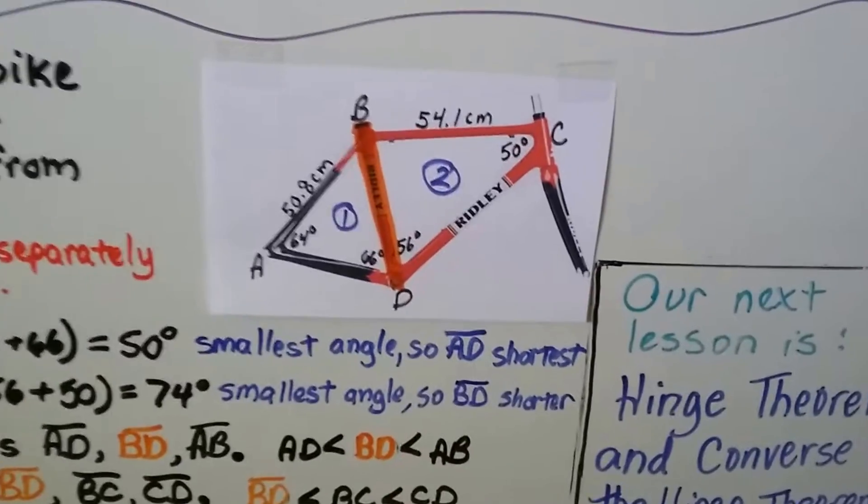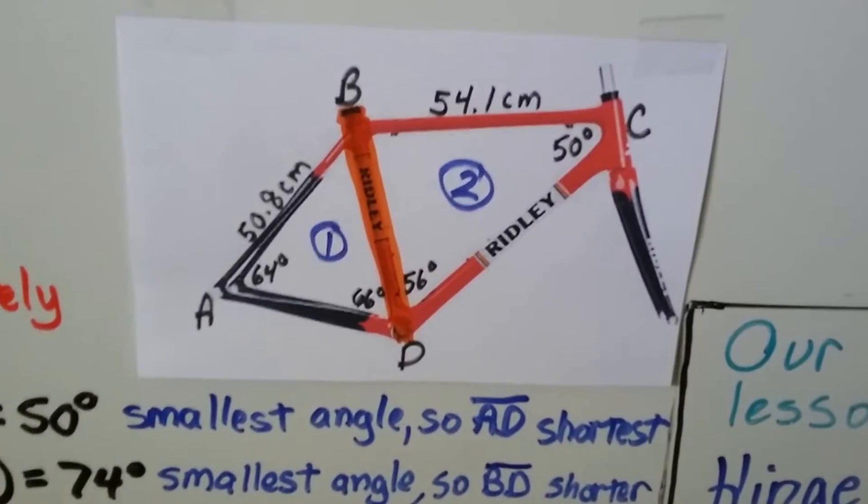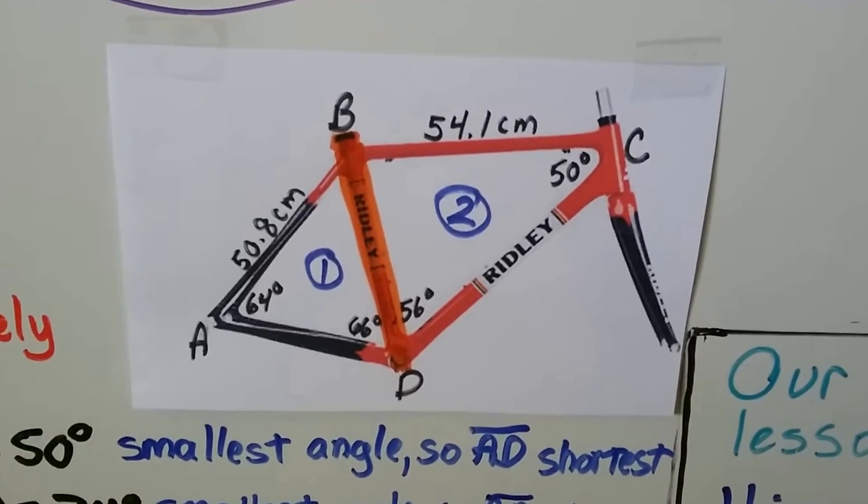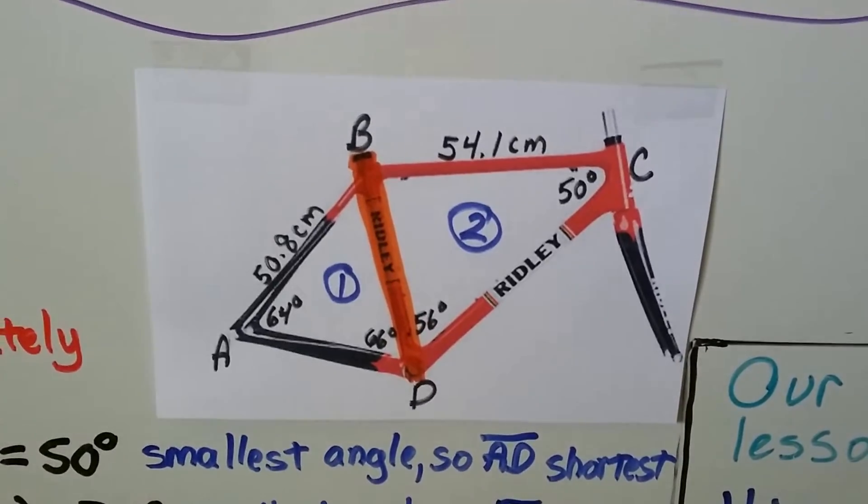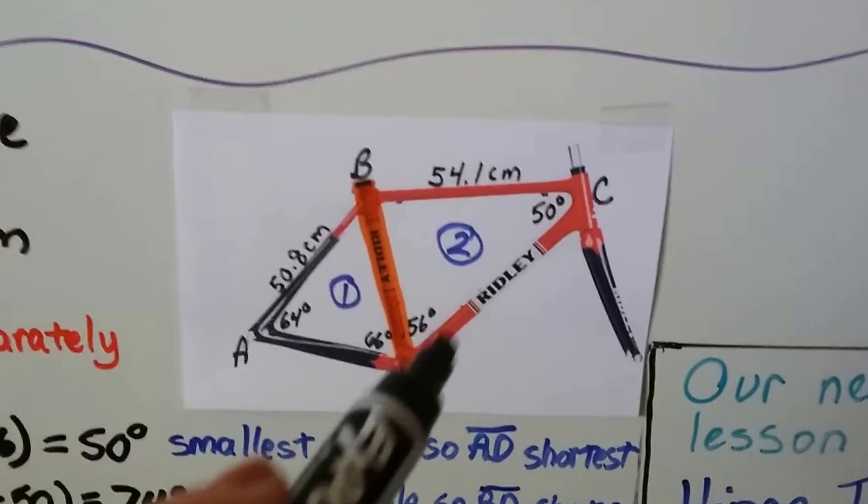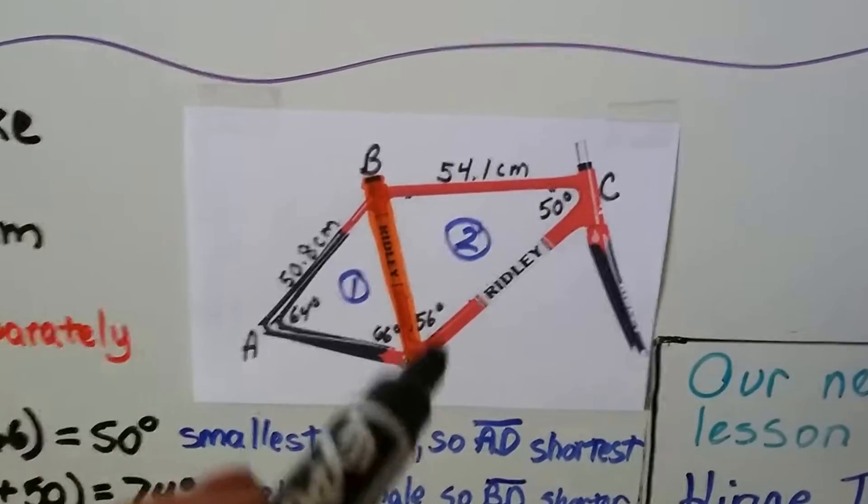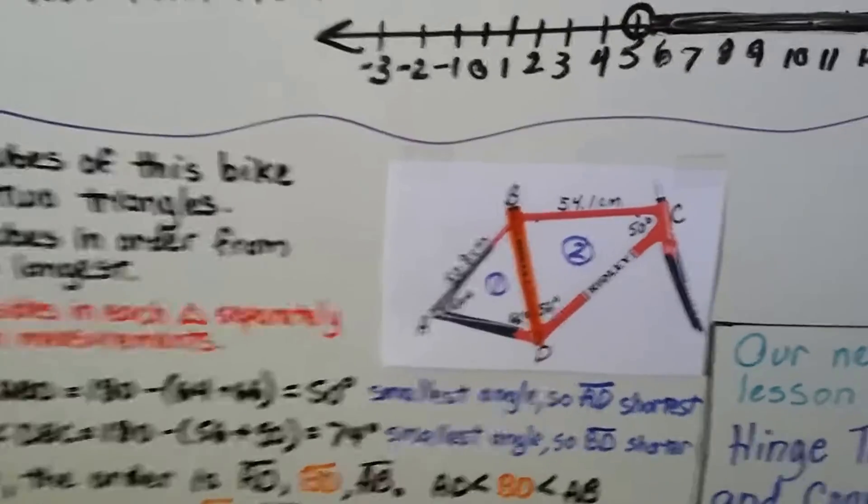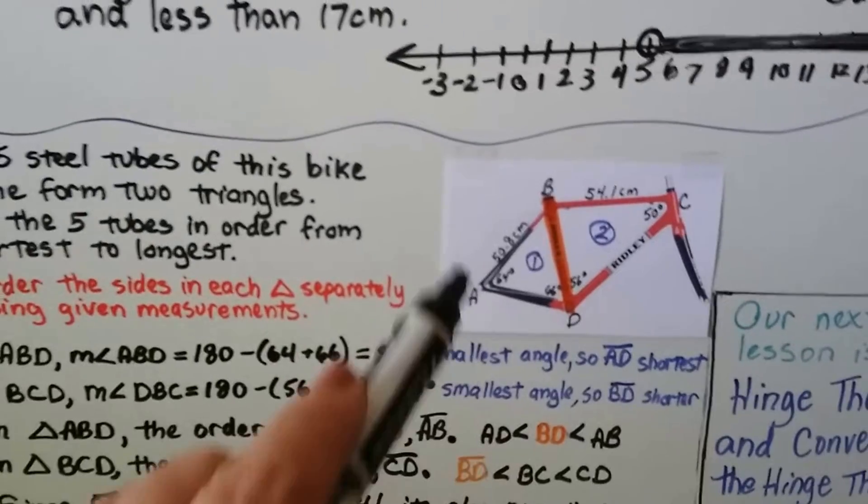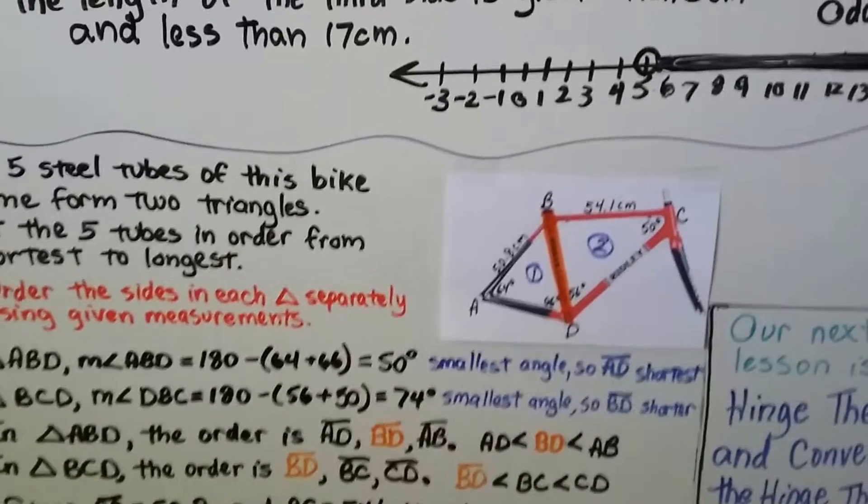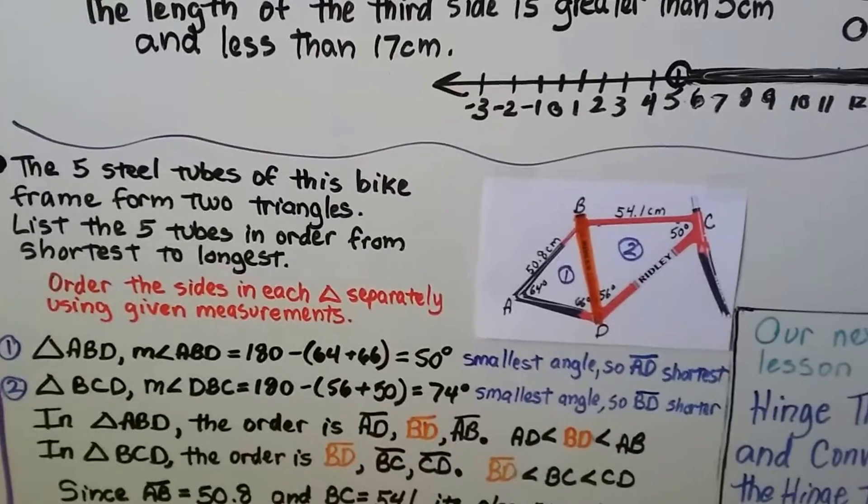Now take a look at this. We have a bicycle frame. For those Ridley super fans out there, these are not exact measurements for a Ridley bike, I just used them for my example. So we've got two triangles, this one and this one. We've got triangle ABD and triangle BCD. And the five steel tubes of this bike - one, two, three, four, five - those are the five steel tubes of the bike frame. They form two triangles.